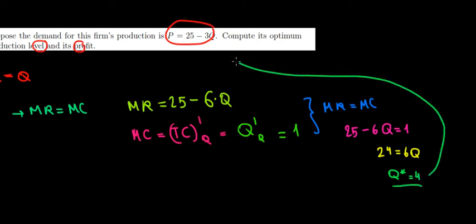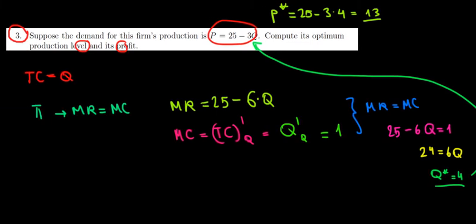We can now calculate the equilibrium price using the price function. P = 25 - 3Q = 25 - 3(4) = 25 - 12 = 13. The equilibrium price is 13.